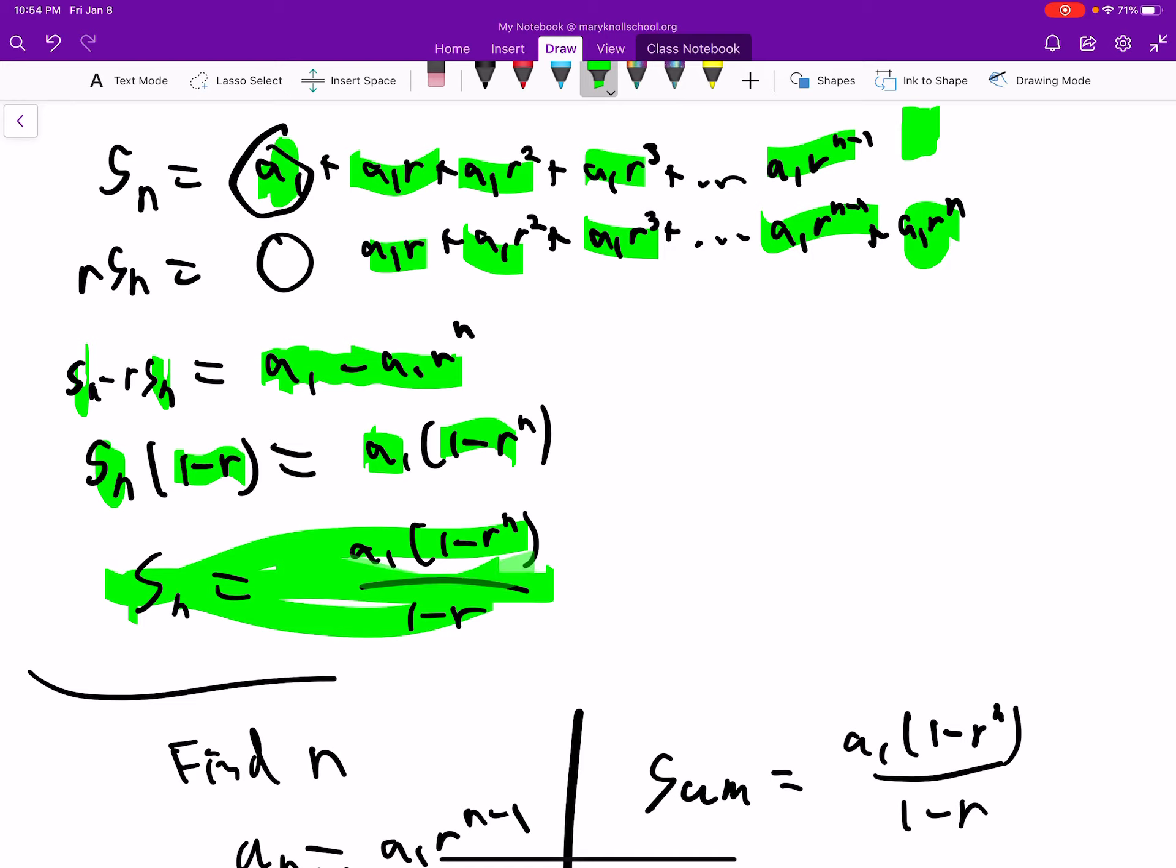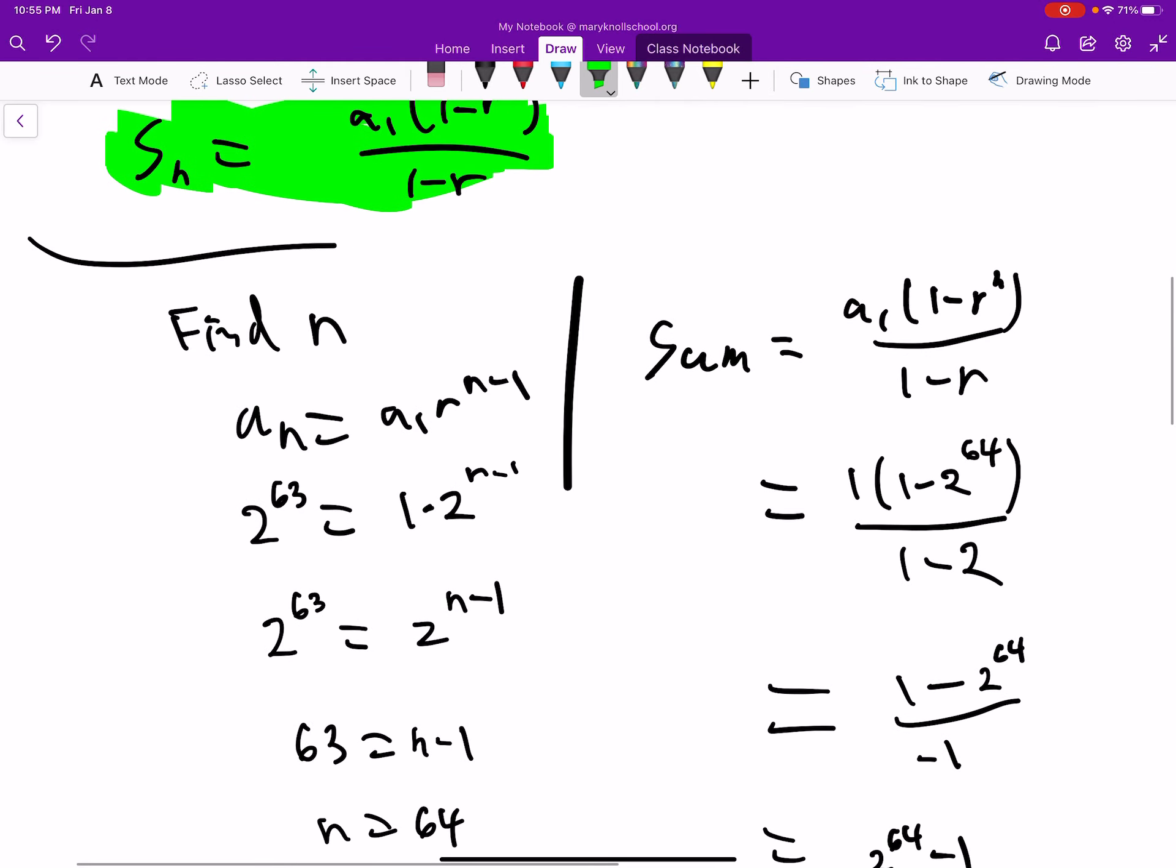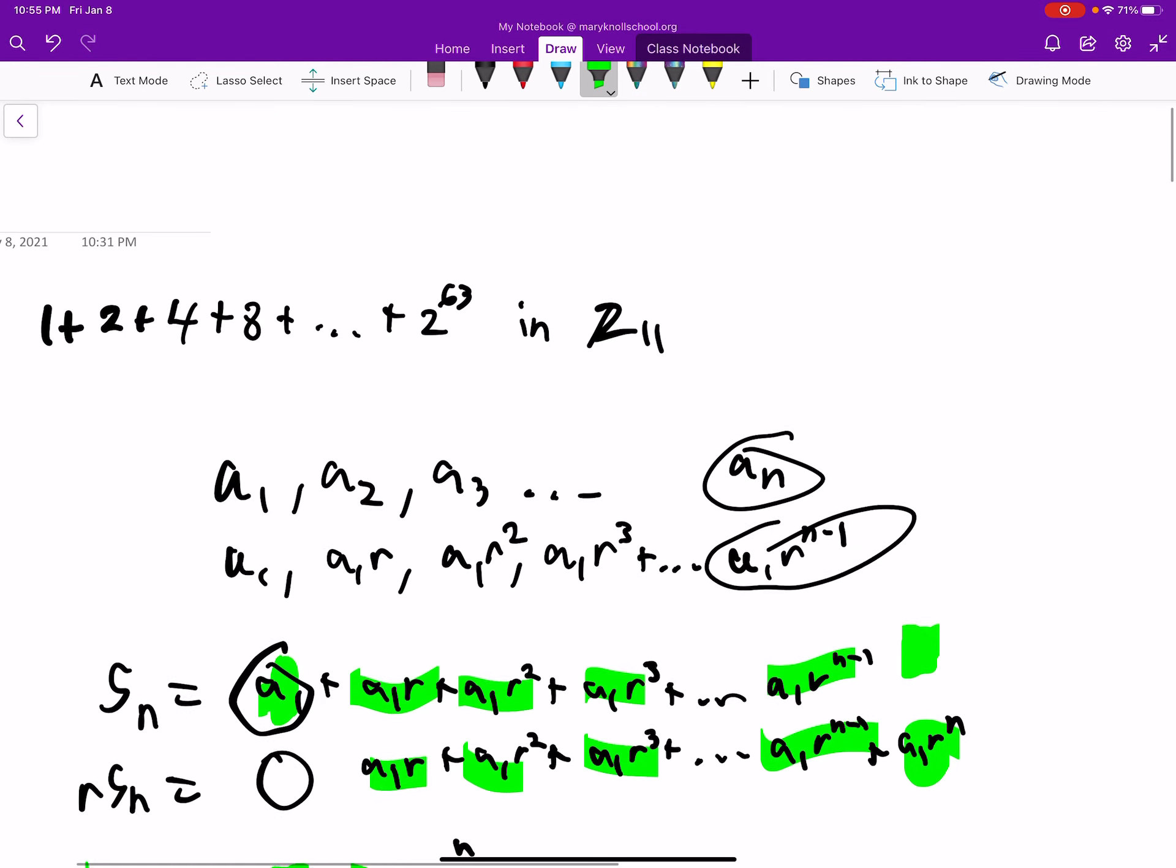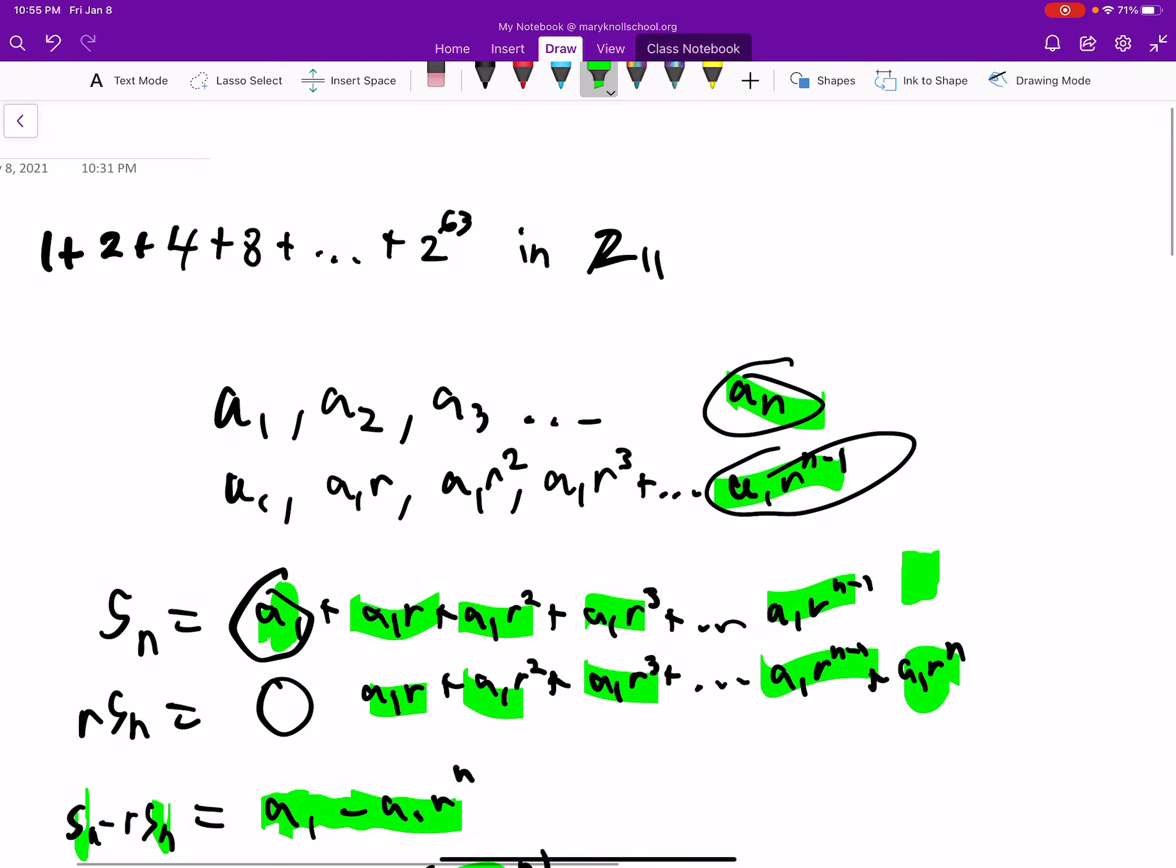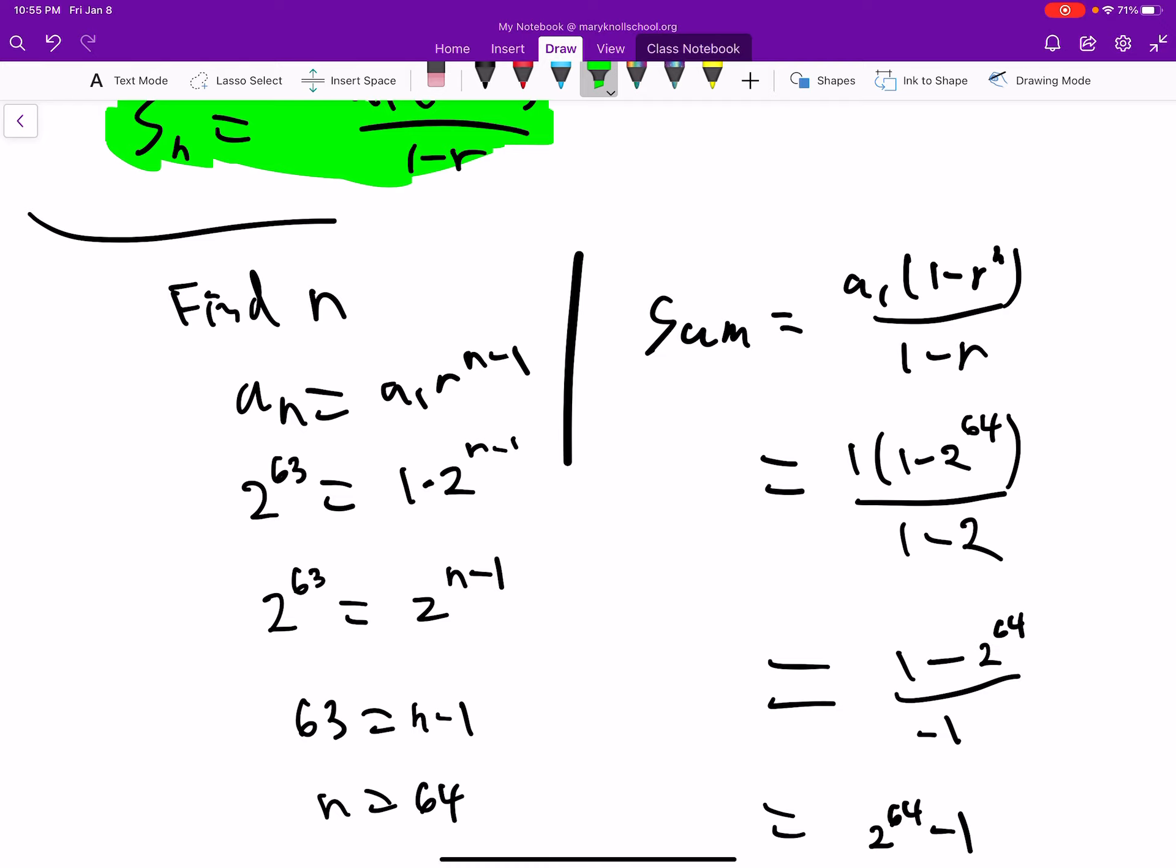So then what we can do is find n, and I couldn't think of a better way than to just do this. If you look here, an is just a1r to the n minus 1, and then we just solve for that n value using standard pre-calculus stuff. So we find out n is 64.